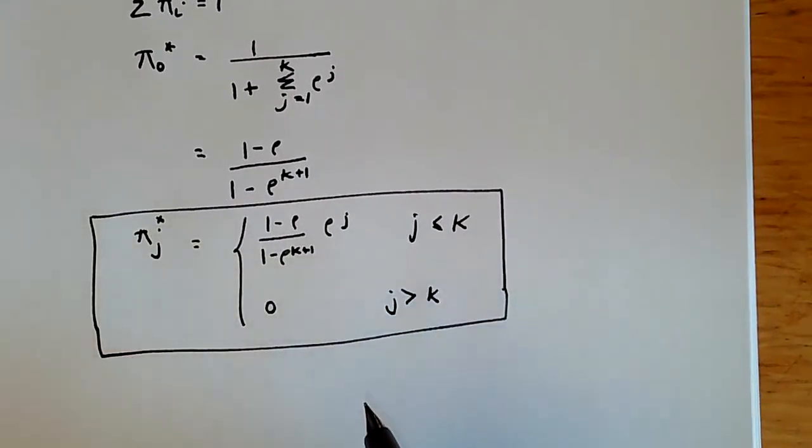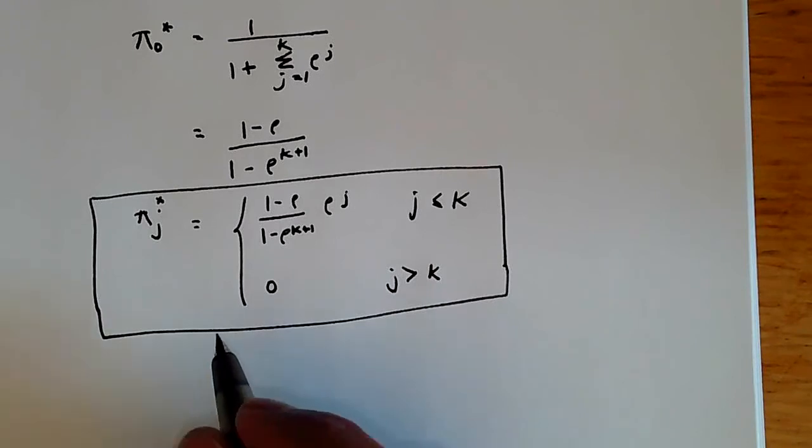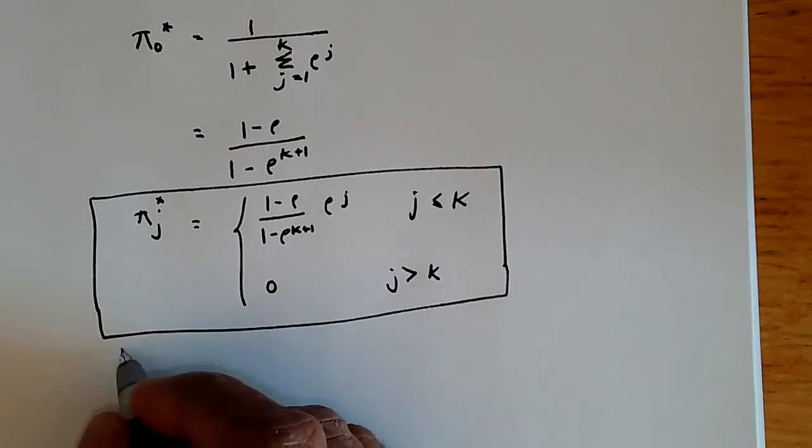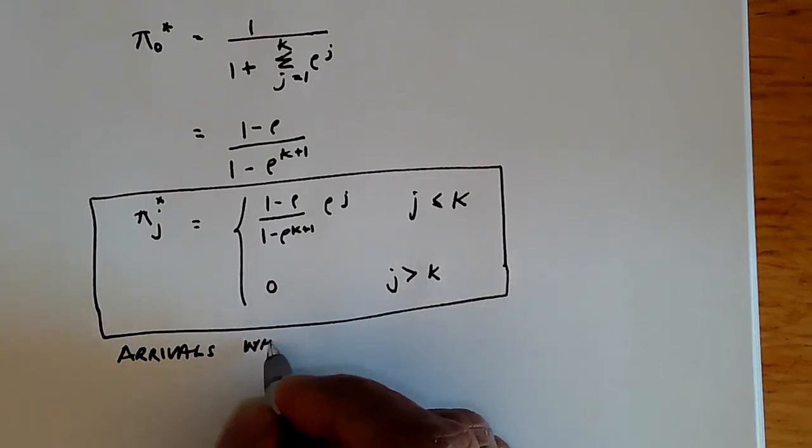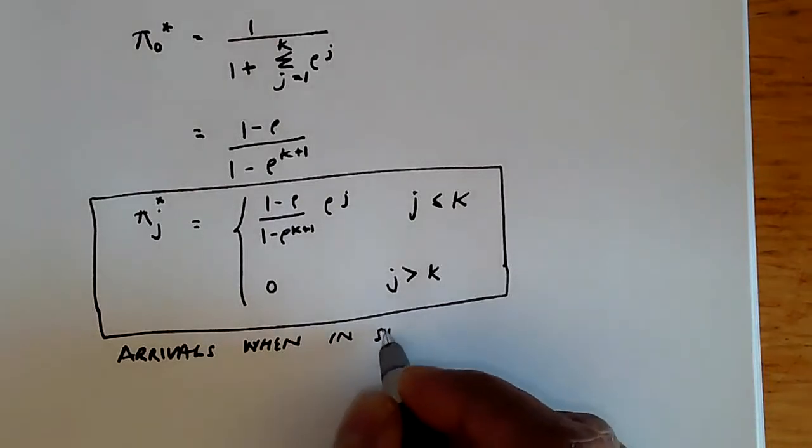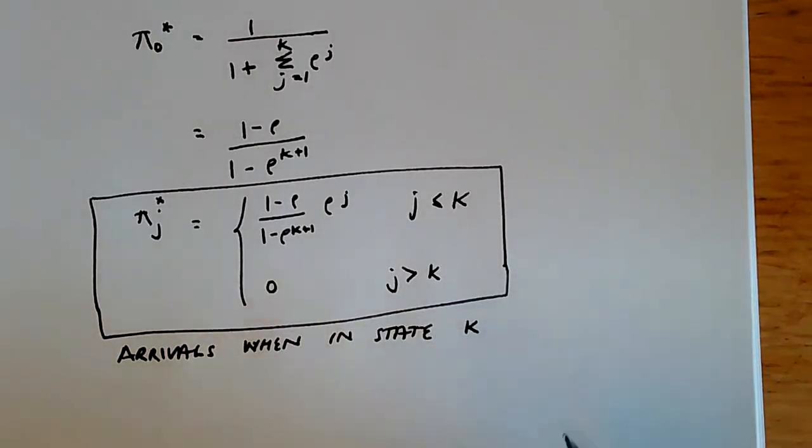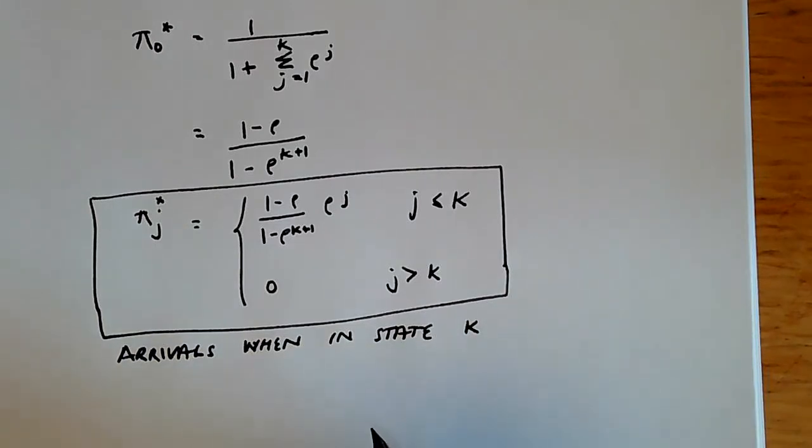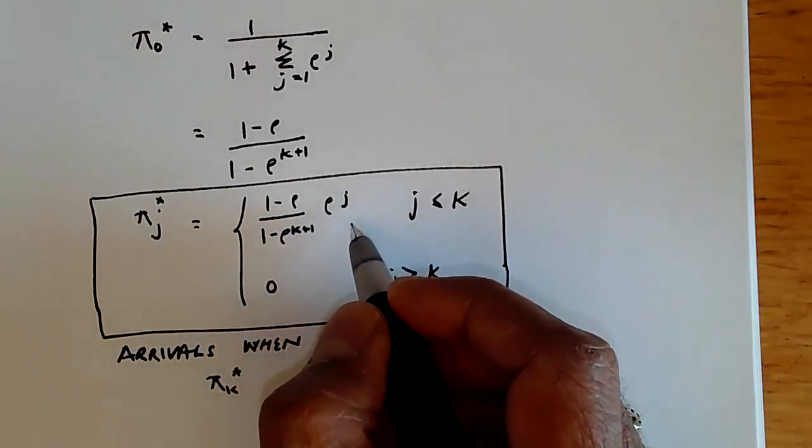And from this we can derive all of the quantities that we want to, that we care about. In particular, we want to know the arrivals when in state k. And this means this is arrivals when it's completely full. And this is given as pi k star. And of course, pi k star can be derived directly from here.